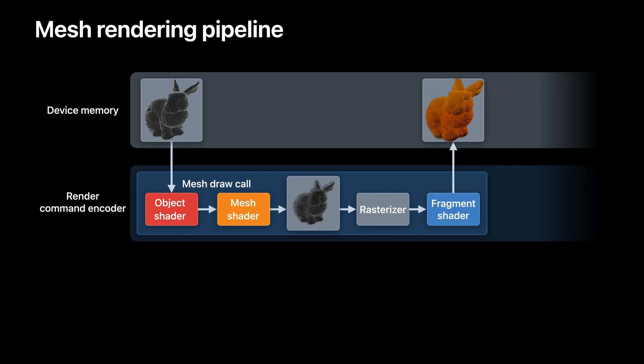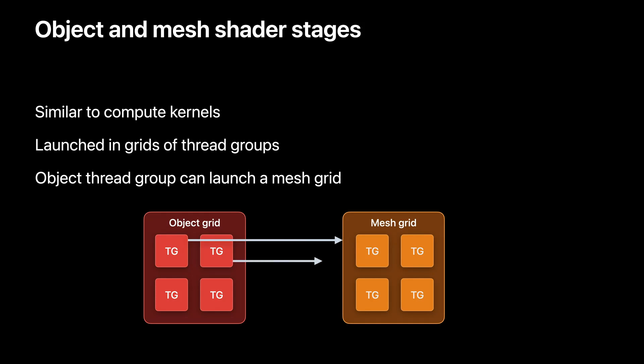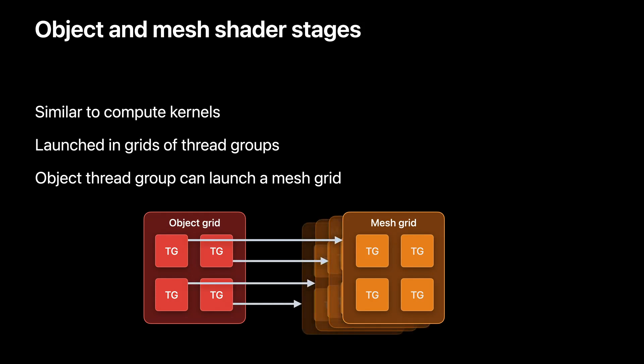Mesh draw calls are performed using the same type of render command encoder as traditional draw calls, and they can be mixed and matched. In contrast to Vertex Shaders, Object and Mesh Shaders are similar to Compute Kernels — they are launched in grids of thread groups. Each thread group is a grid of individual threads that can communicate with each other. Each Object thread group can spawn a mesh grid and programmatically define the size of the mesh grid it launches, providing plenty of flexibility. Each Object thread group passes payload data to the mesh grid it spawns. The Object Stage processes objects, which is an abstract concept you can define — it can be a scene model, a part of a scene model, or a region of space for procedural geometry. The Mesh Stage is designed to build meshes and send geometry data directly to the rasterizer.